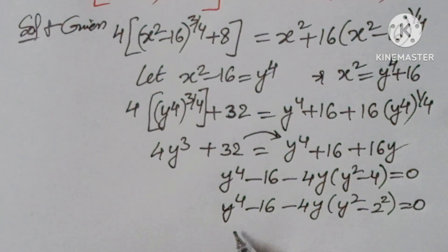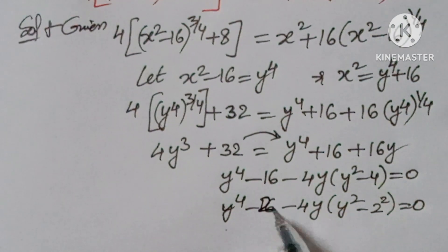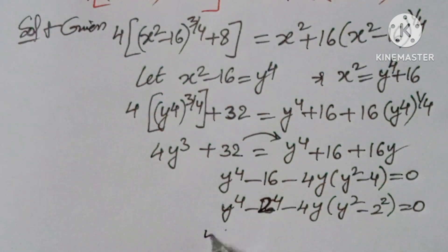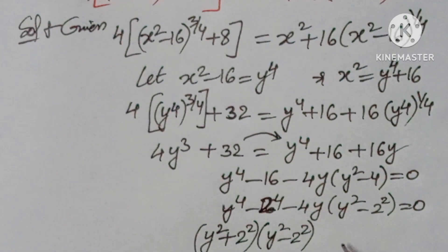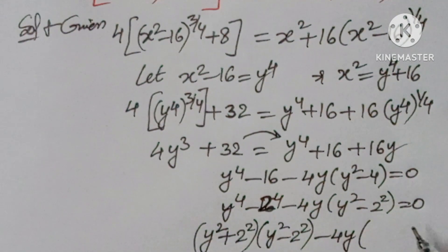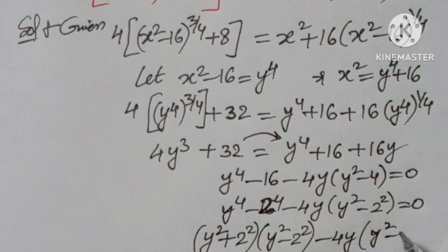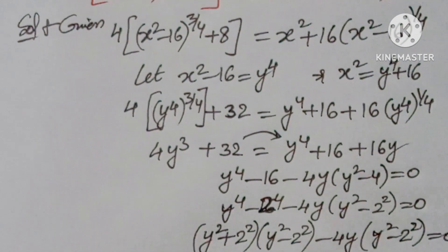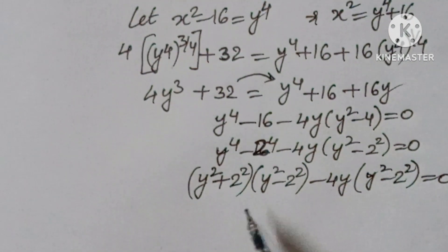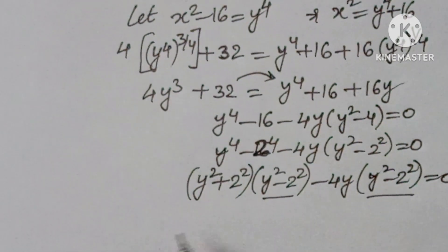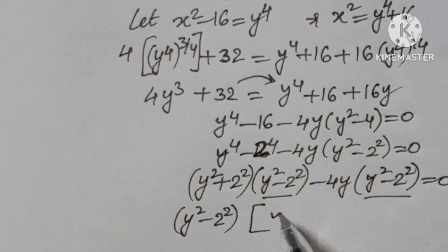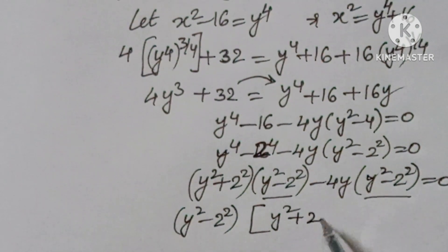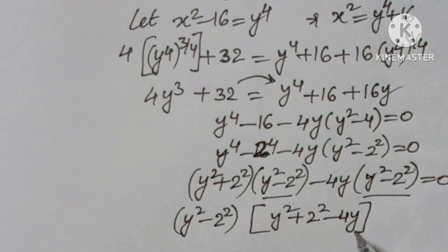We can write 16 as 2 to the power of 4. So y to the power of 4 minus 2 to the power of 4 factors as (y squared plus 2 squared)(y squared minus 2 squared). This gives: (y squared minus 2 squared) into (y squared plus 2 squared minus 4y) equals 0.